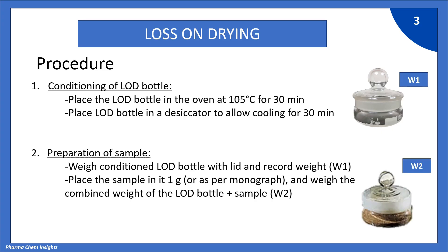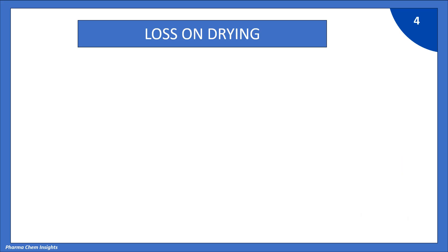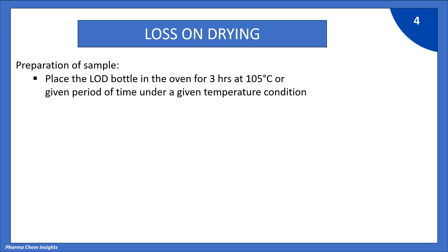Second is preparation of sample. Weigh the conditioned LOD bottle with lid and record the weight as W1 gram. Then place the sample in it — about 1 gram or as per monograph — and weigh the combined weight of the LOD bottle plus sample as W2 gram. Place the LOD bottle in the oven for 3 hours at 105 degree Celsius for drying, or for the given period of time under the given temperature condition.